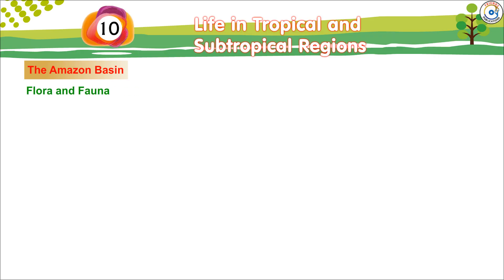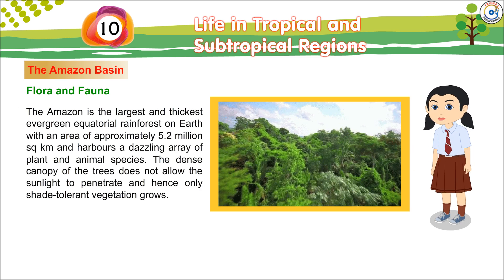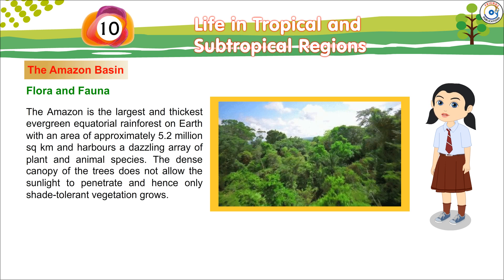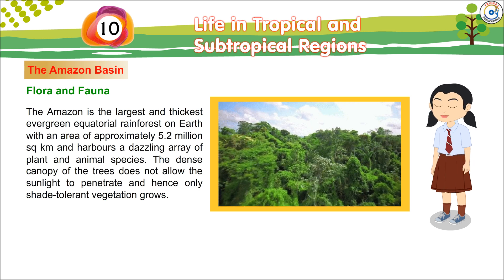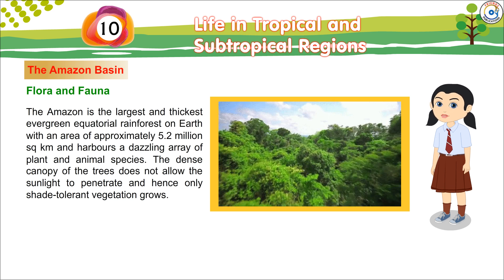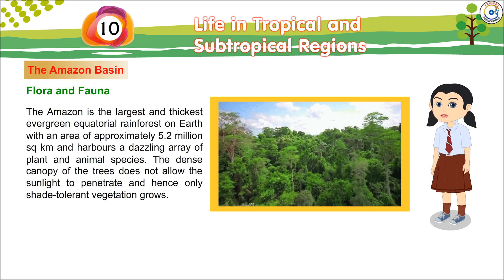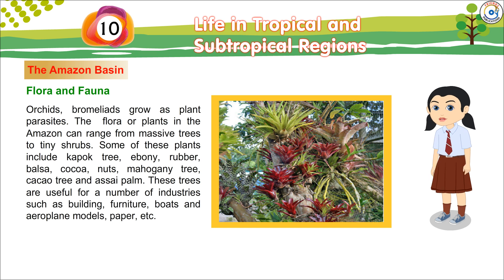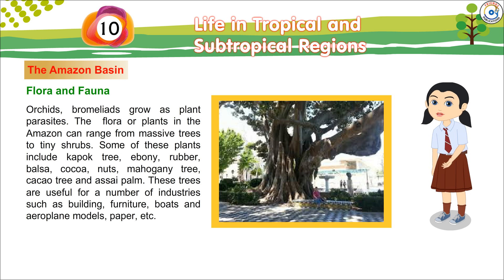The Amazon is the largest and thickest evergreen equatorial rainforest on earth, with an area of approximately 5.2 million square kilometers, and harbors a dazzling array of plant and animal species. The dense canopy of the trees does not allow sunlight to penetrate, and hence only shade-tolerant vegetation grows. Orchids and bromeliads grow as plant parasites. The flora in the Amazon can range from massive trees to tiny shrubs.